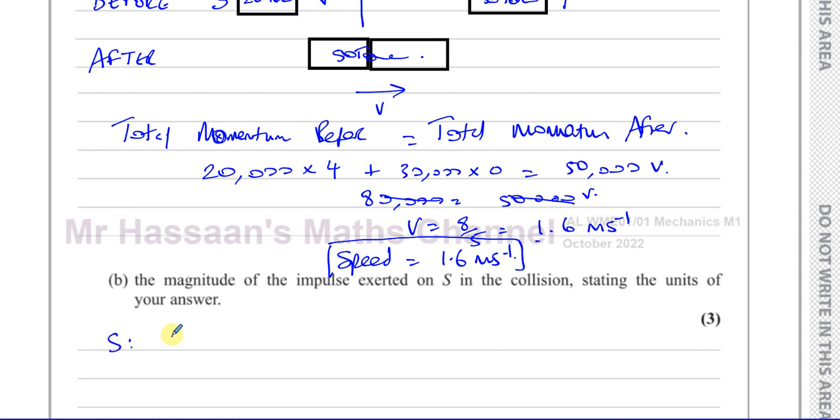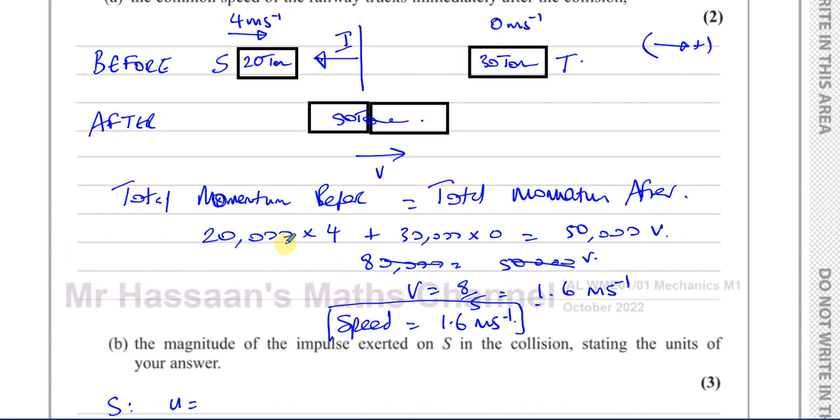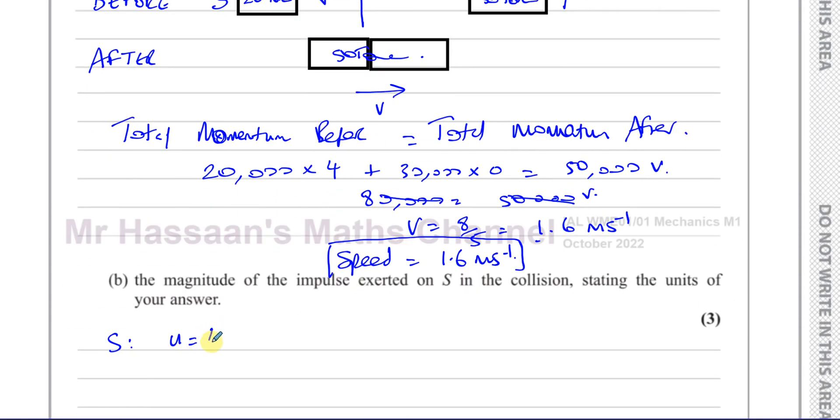we can think about its initial speed before the collision was, as we saw here, 4 meters per second. And its final speed after the collision was in the same direction, but reduced to 1.6 meters per second. And its mass, as we were told, is 20,000 kilograms. We have to talk about terms of SI units.